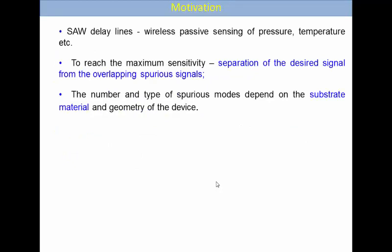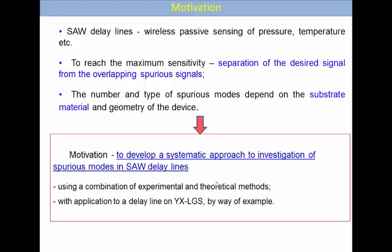Delay lines are now widely used in wireless for wireless passive sensing of different quantities like pressure, temperature, and so on. To reach the maximum sensitivity of such devices, it is necessary to separate the desired signal from overlapping spurious signals. The number and type of these signals depend on the substrate material and geometry of the device. Our motivation was to develop a systematic approach to investigation of spurious modes in SAW delay lines using a combination of experimental and theoretical methods, and by way of example, these methods were applied to a delay line on YX-cut langasite.